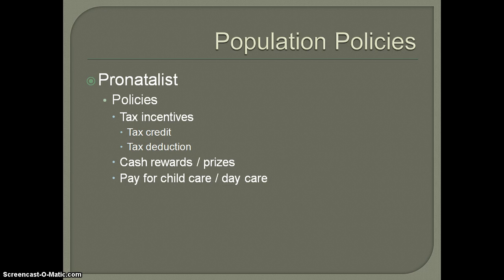Other things that maybe aren't as obvious would be tax incentives. We have this here in the United States — you either get a tax credit based on the number of children in your family, or you might get a tax deduction for money spent on things like child care or schooling related to having children. These tax incentives aren't as obvious, but they would be considered pronatalist policies because they help do away with the fears people have about having children, especially when it comes to cost and expense.